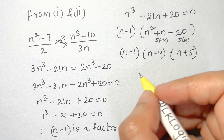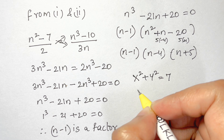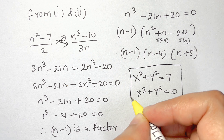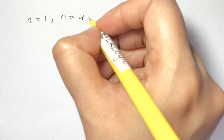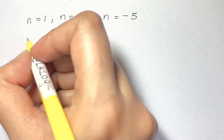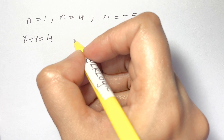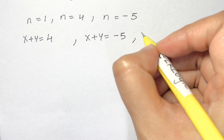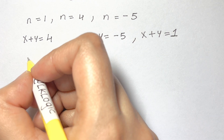We have three candidate values: n equals 1, n equals 4, and n equals negative 5. We need to check each one. Starting with x plus y equals 4, we get y equals 4 minus x.